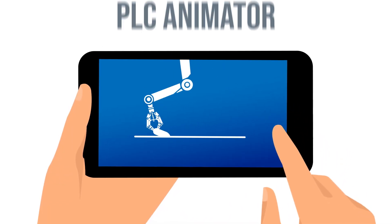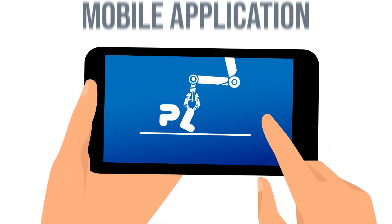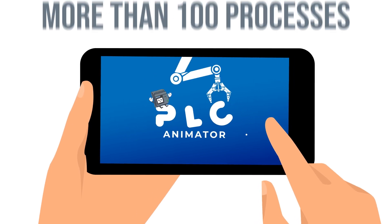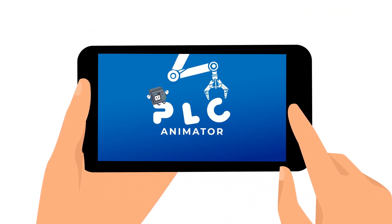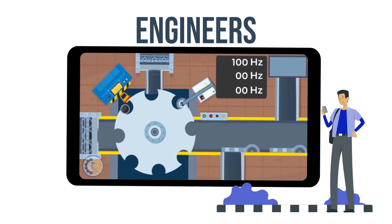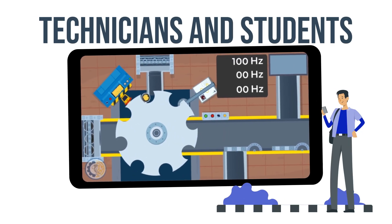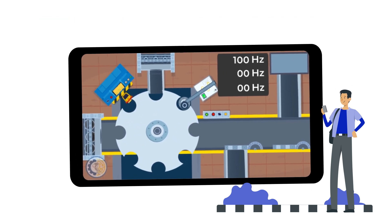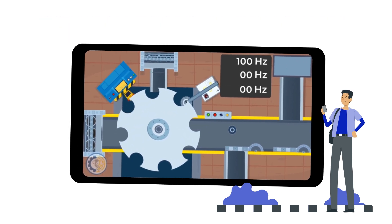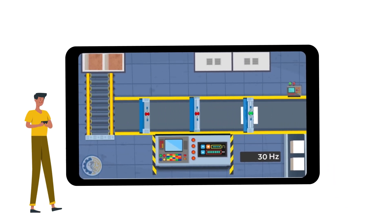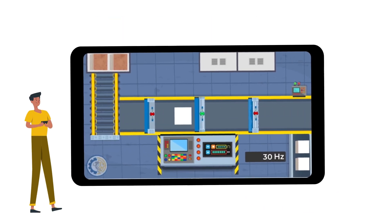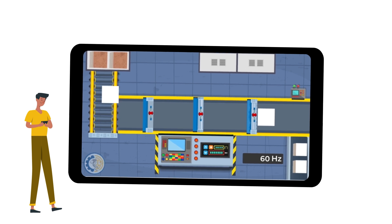Welcome to PLC Animator, the mobile application that allows you to simulate more than 100 industrial processes in the palm of your hand. With PLC Animator, engineers, technicians and students can experience the real world of industrial automation. The exercises are based on real processes, ideal for practicing without the need for a physical PLC.